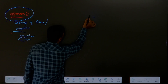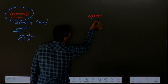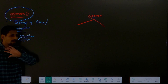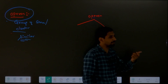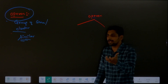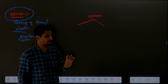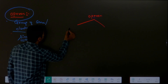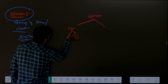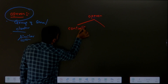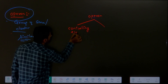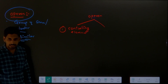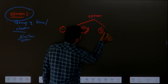So if we study any operon, in your syllabus lac operon is given in detail. But right now we are not talking about lac operon, we are talking about a general operon - that many genes are present, all of them perform similar kind of function. Inside any operon, two things are present, or two types of genes are available. The first one is called the controlling element, and the second one is the structural gene.